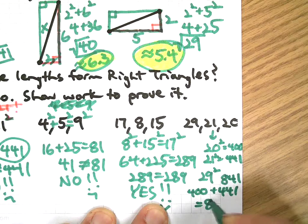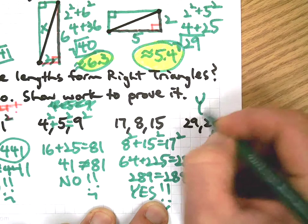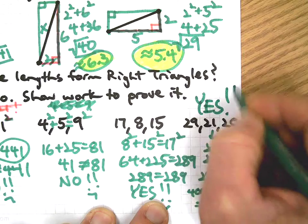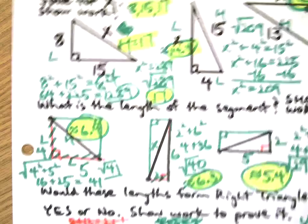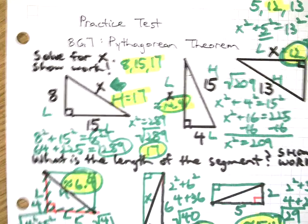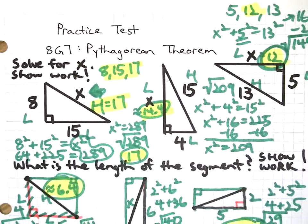400 plus 441 equals 841. That's a yes. And this video is done. That is the practice test given in class, but you don't have to be in my class to get some value out of that.